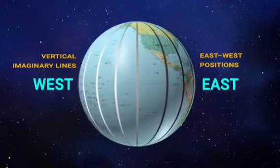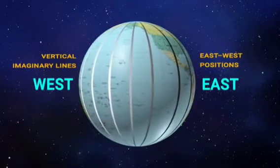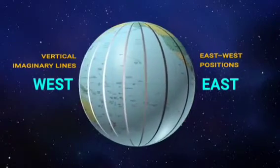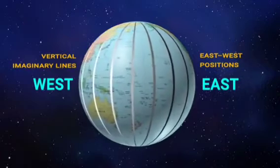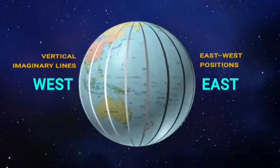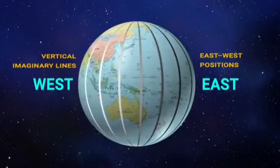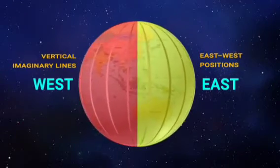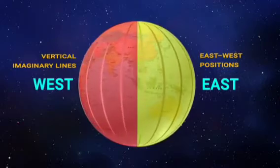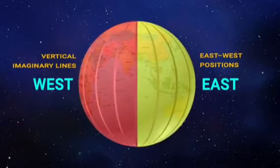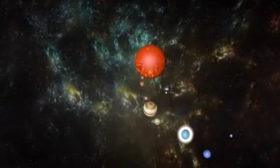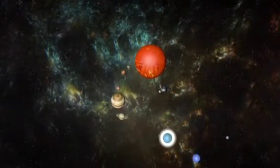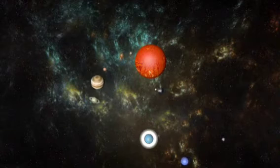Longitudes are vertical imaginary lines running from pole to pole. Longitude is a geographic coordinate that specifies the east-west position of a point on the earth's surface.